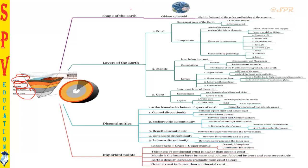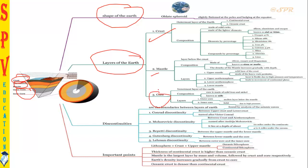Here we shall see the shape of the Earth and layers present in it — crust, mantle, and core. Each of these parts has its own discontinuity. Those discontinuities we will also be learning clearly, and then we shall remember what the important points needed for this topic are.